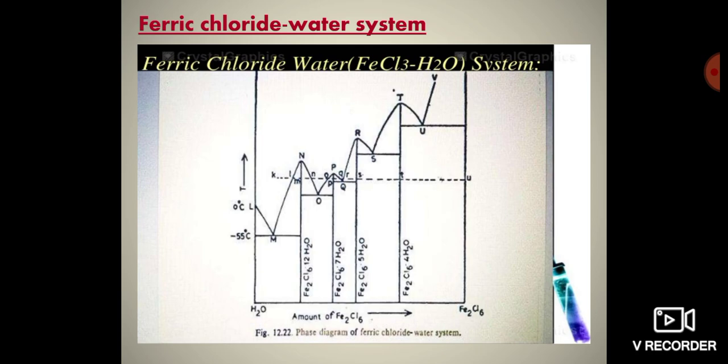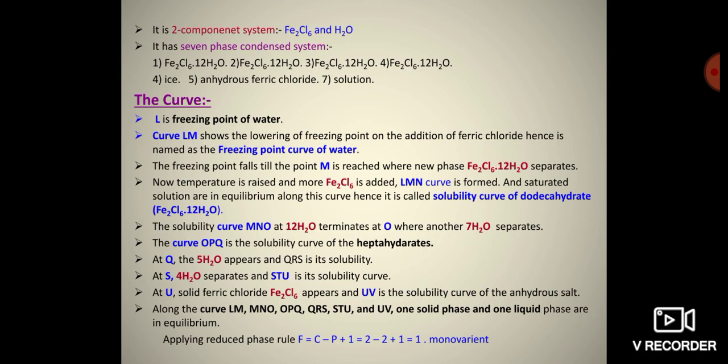Next is the ferric chloride and water system. This is a two component system: one is Fe₂Cl₆ (ferric chloride) and another is H₂O. It has seven phases: Fe₂Cl₆·12H₂O, Fe₂Cl₆·7H₂O, Fe₂Cl₆·5H₂O, Fe₂Cl₆·4H₂O, anhydrous ferric chloride, ice, and the solution.